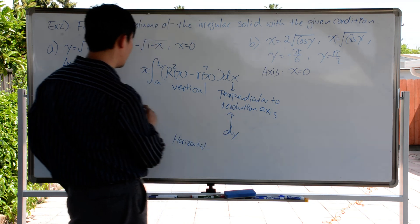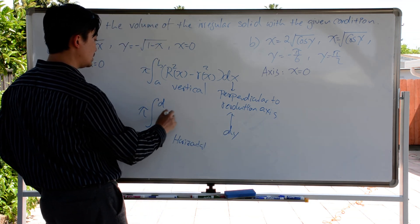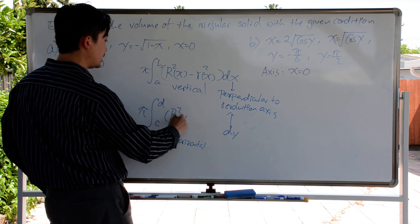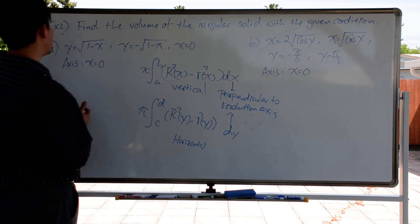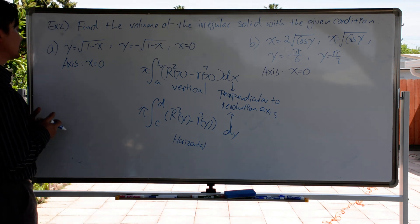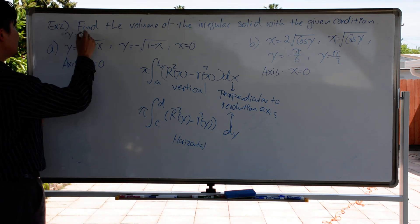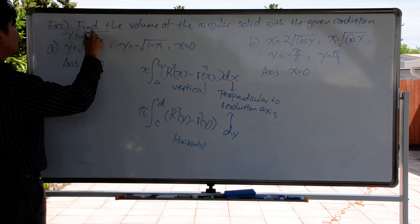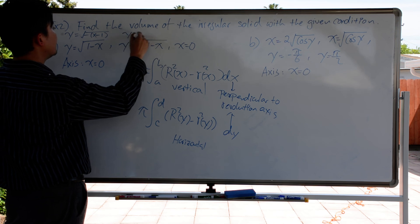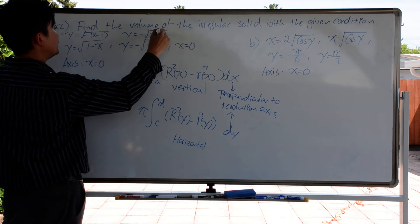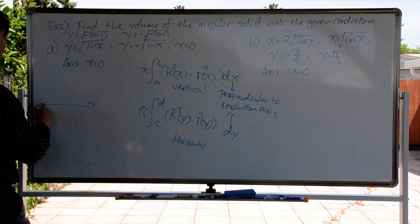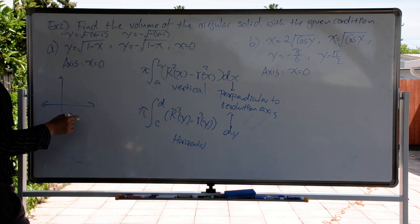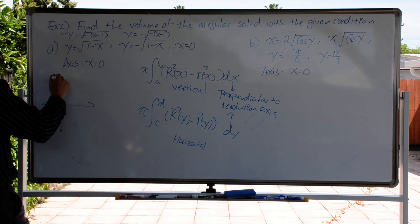Same thing for dy. For the horizontal case, we have the integral from c to d of capital R(y) squared minus little r(y) squared, times dy. Now take a look at this example: the radical of 1 minus x. We can rewrite it as y equals negative square root of quantity x minus 1. Both curves start with the same vertex at x = 1. This one is reflected over the x-axis, going this way.